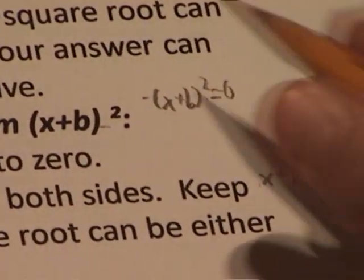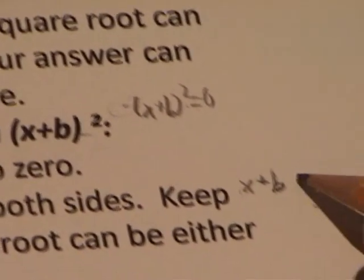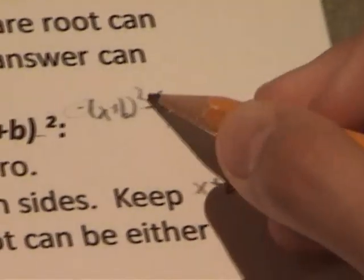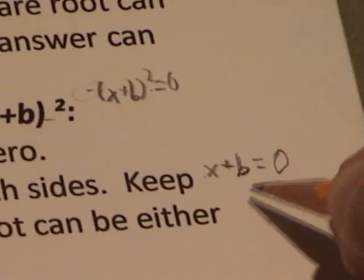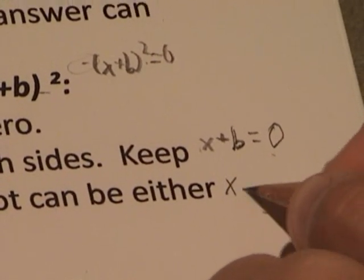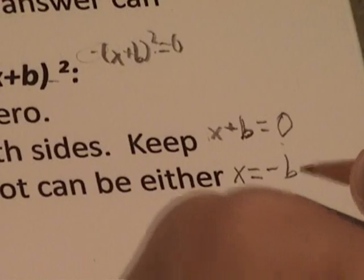However, at this point, since there is no coefficient, you don't need to know that. The square root of 0 is always 0, then solve for x, so x equals negative b in this case.